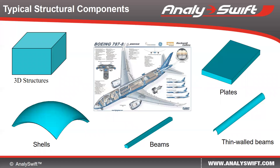To avoid the potential issues of bottom-up modeling, we can approach this problem from the system perspective. A real structure, no matter how complex, can be modeled as a combination of 3D structures if all three dimensions are of similar size, or 2D plates and shells if one dimension is much smaller than the other two, or beams if two dimensions are much smaller than the third one, or shell-wall beams if all dimensions are orders of magnitude different.